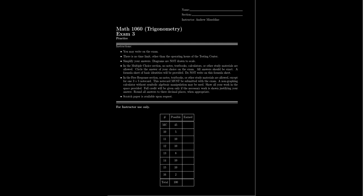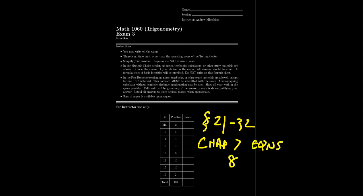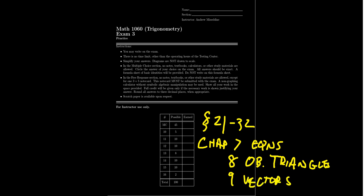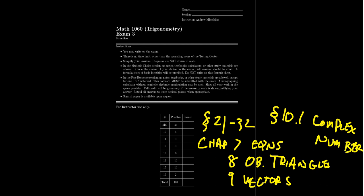What I want to do in this video is briefly talk about the topics that will be covered on Exam 3 so you know which topics to study. This exam will cover topics from Lecture 21 through Lecture 32, covering Chapter 7 about solving trigonometric equations, Chapter 8 about oblique triangles, Chapter 9 about vectors, and Section 10.1 about complex numbers. There will be one question about complex numbers.